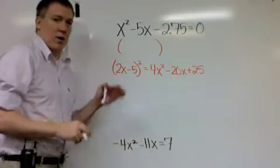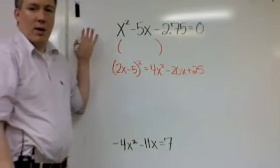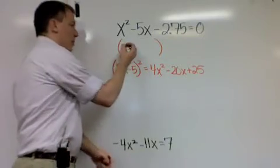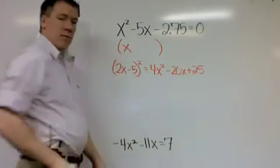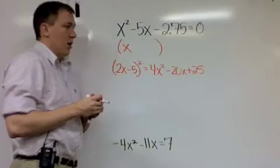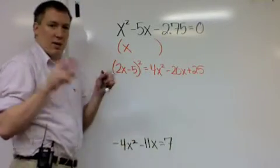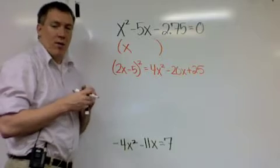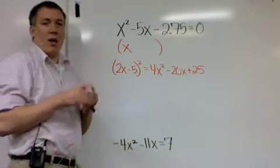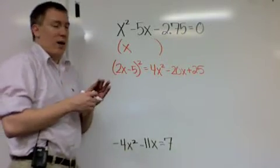First thing is to look at the first term, x squared. Take the square root of it, well that would be x. Now I can take a look at the second term, the last term, and take the square root, but that's not going to be so helpful unless it's already a square itself.